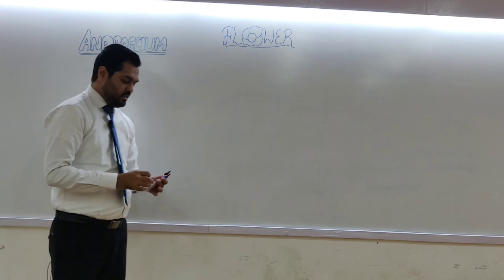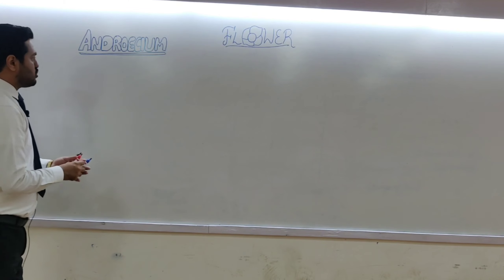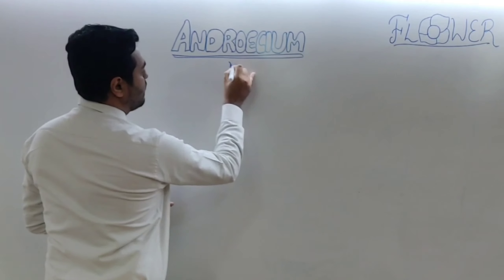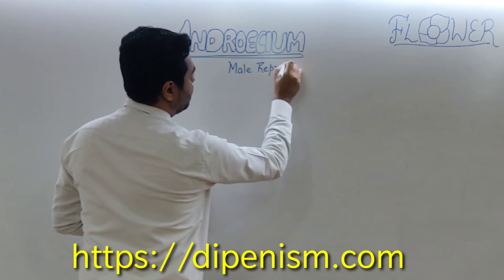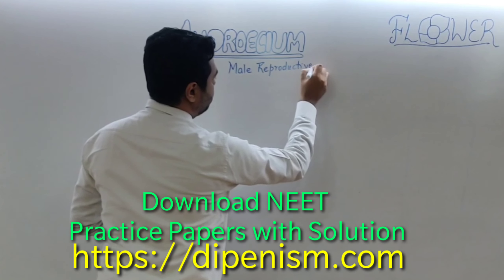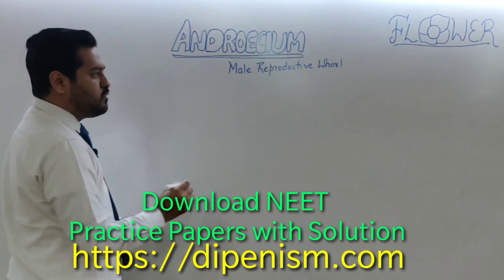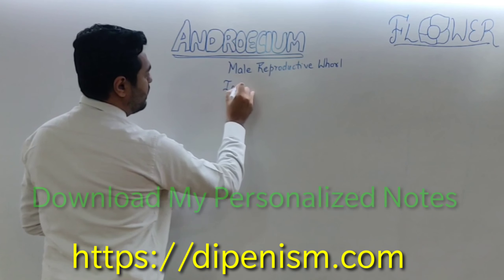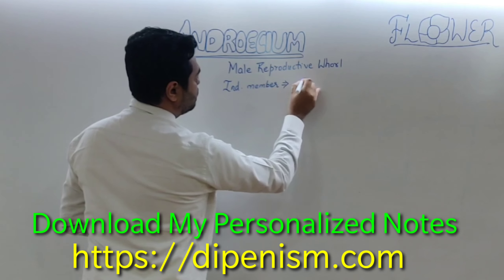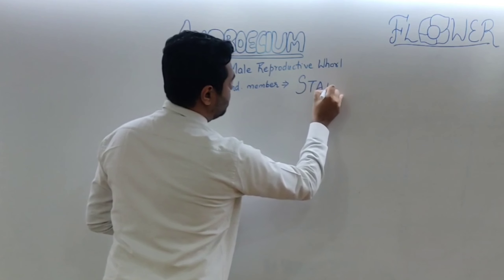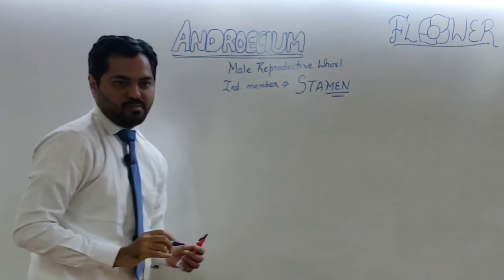Our next discussion is about the androecium. The androecium is the male reproductive whorl of the flower. The individual member of this male reproductive whorl is known as the stamen. The stamen is the male reproductive unit.